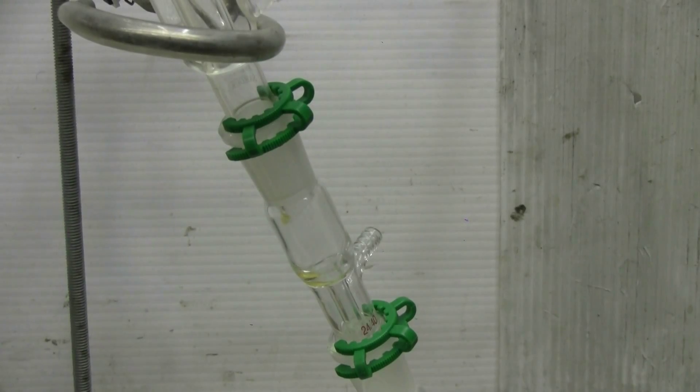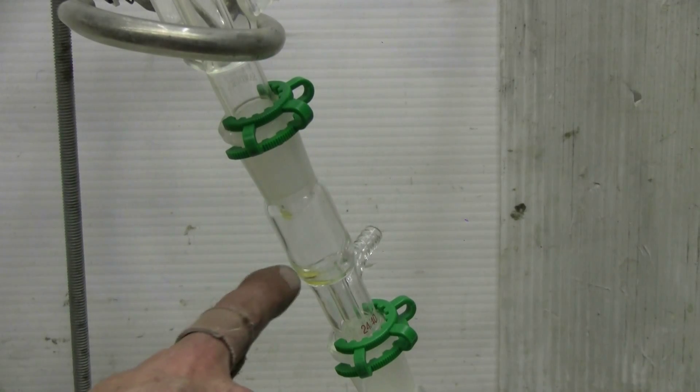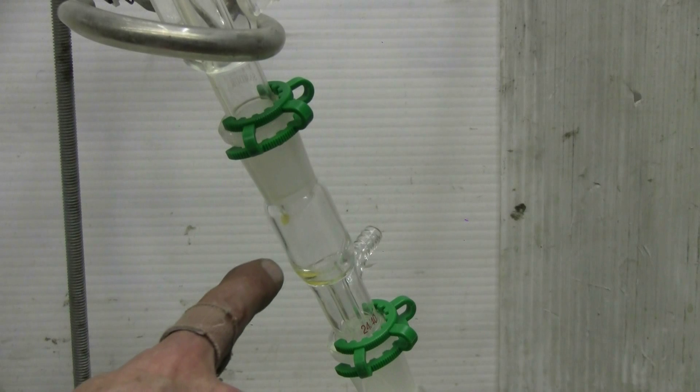We can see a bit of the initial distillate, it's yellowish in color here, beginning to collect as I continue to keep the propane torch to the reaction vessel.